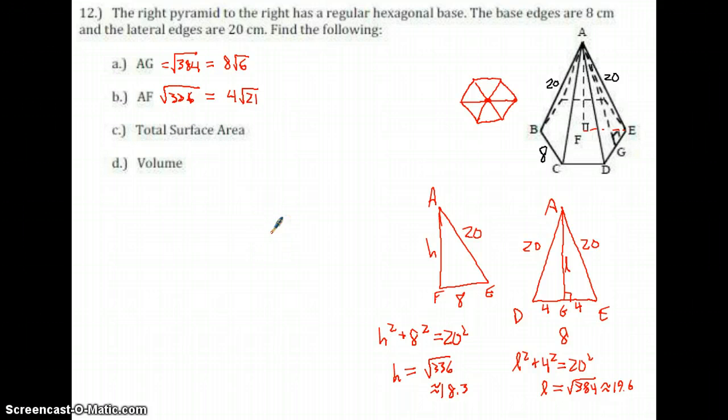Total surface area, that's going to be for part C. This is part A by the way, this is part B. Part C is lateral area plus a base. Lateral area is half PL plus the hexagon area.